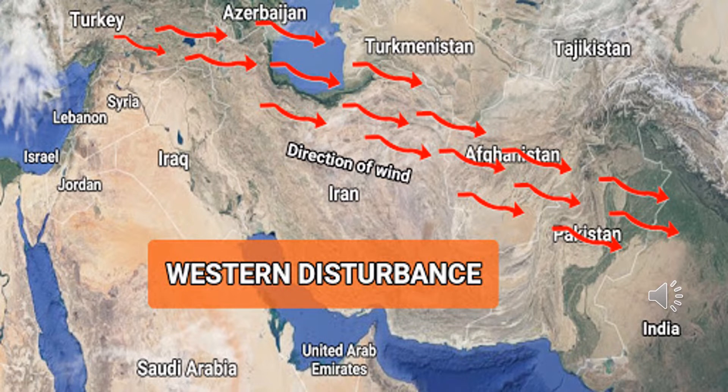Western disturbance is an extratropical storm which originates from the Mediterranean region. It brings winter rainfall and snowfall in the northern, northwestern, and western parts of Pakistan. Most of the moisture in this extratropical storm is taken from the Mediterranean Sea, the Caspian Sea, and the Black Sea.